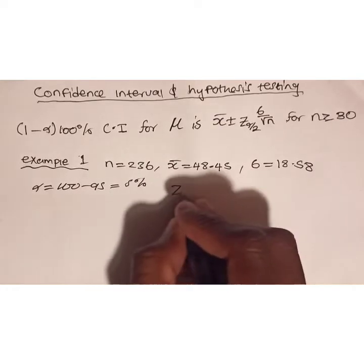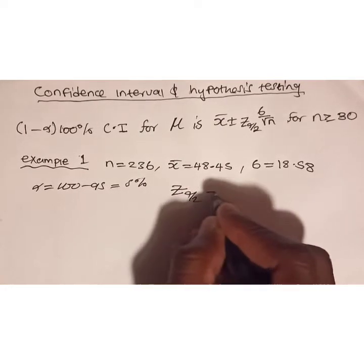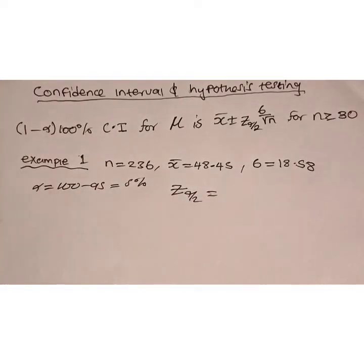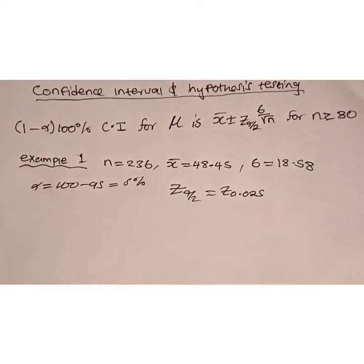This means we'll have to look for z of alpha over 2, which is the same as 0.025. We'll look for this value from the z table. To make it easy to find z of 0.025, first we subtract 0.025 from 0.5, then we look at the probability.